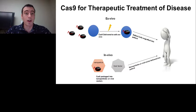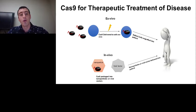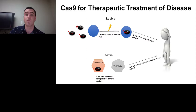Today I'm going to be talking about work we recently published earlier this year in January on BioArchive as a preprint, currently under review in Nature Medicine, where we identified the existence of pre-existing adaptive immune responses to Cas9 in humans. As many of you are aware, the CRISPR-Cas9 system has become a very powerful tool for genome editing and is being rapidly applied towards the treatment of genetic disease.